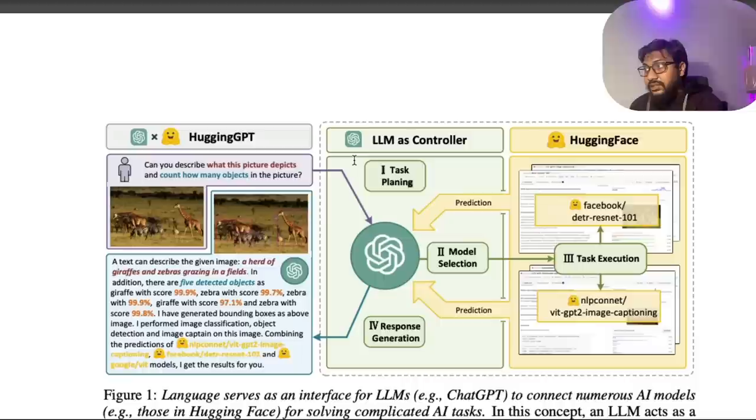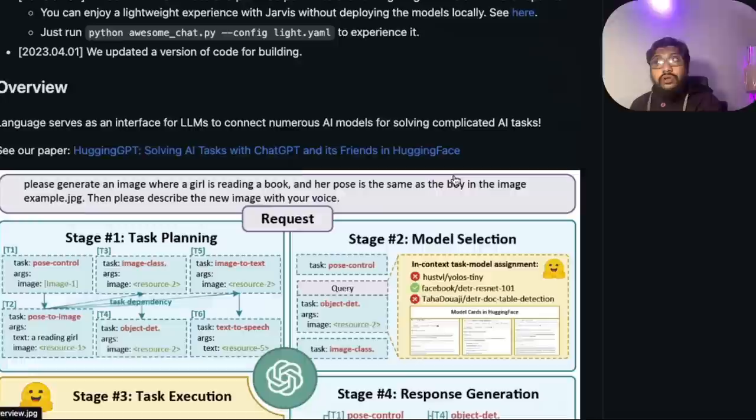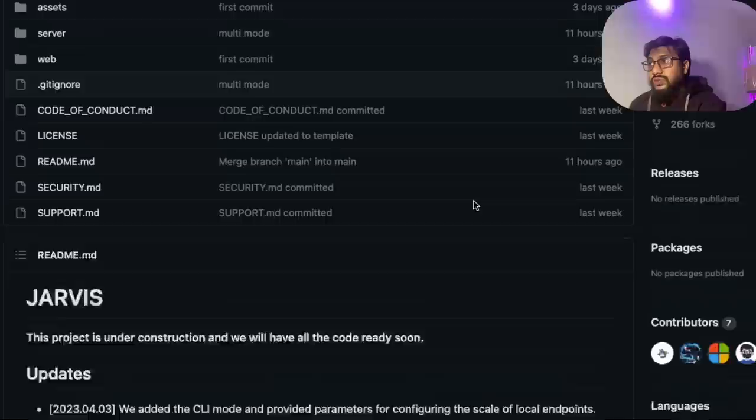If you have HuggingGPT, you can give a text and that can go plan the task, select the models, create or execute the task, get the response back and give it back to the user. This user finally sees this thing with whatever the image that has been generated. This is quite impressive. It looks like almost like Microsoft is bang on with respect to AI and they want to do something.